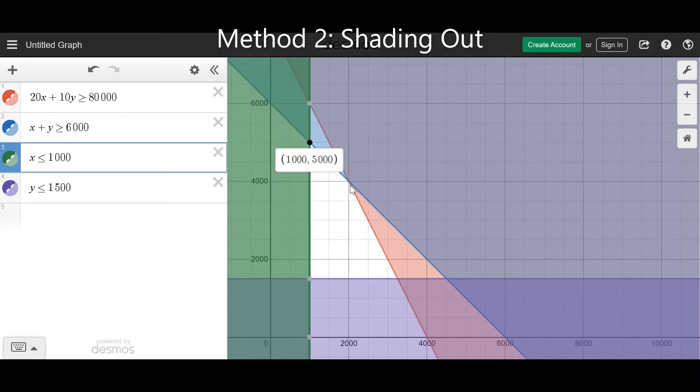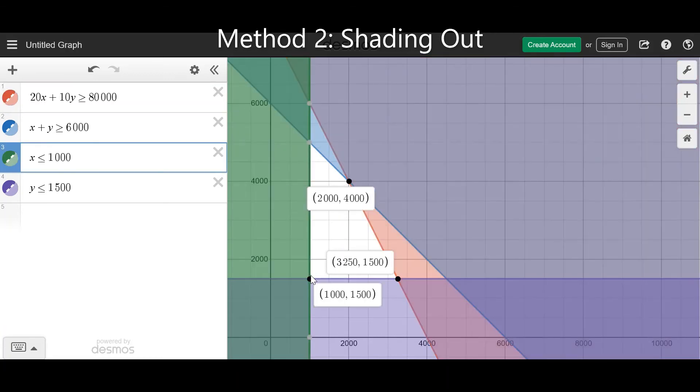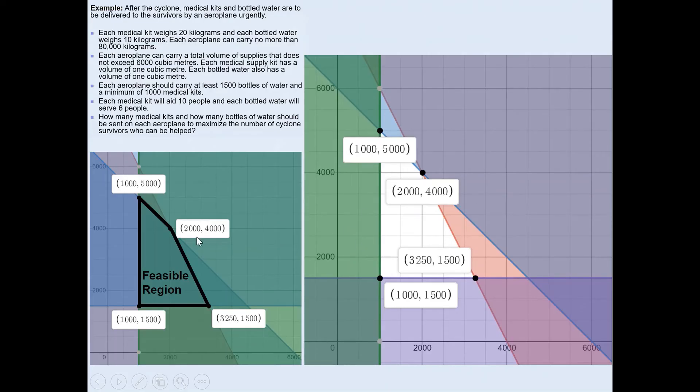And then you can click the vertices. You get the same result. That's basically what we are after. I've shown you the two methods, either shading in or shading out. Shading out is pretty easy to see the feasible region. Either way, you'll get the same vertices.